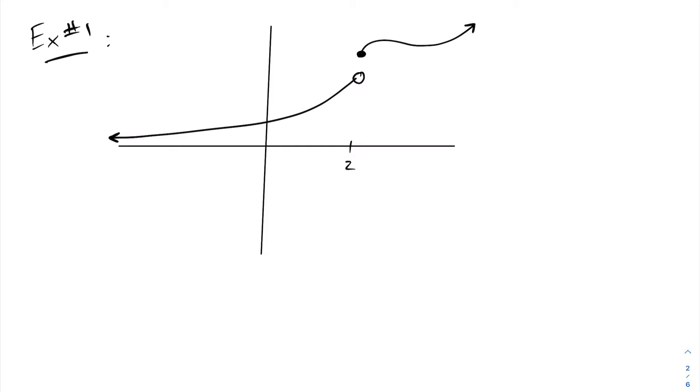For our first example here we can see that we have continuity going all the way through here. Right here we have a sort of a jump or a break in the graph, and you can see here right at x equals 2 we have a point of discontinuity.